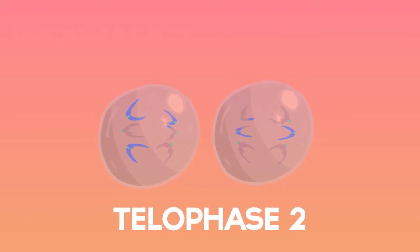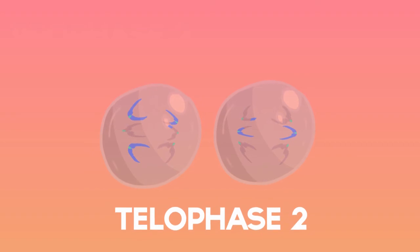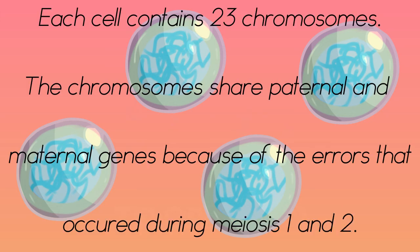Telophase II occurs, where the chromosomes uncoil, the spindle fibers disappear and the nuclear membrane forms around the chromosomes, resulting in one haploid cell with 23 chromosomes in each of the four cells.